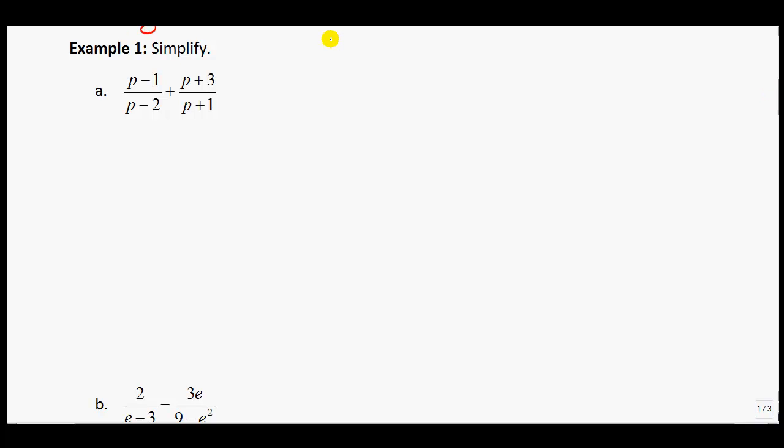Like all of them, I start out with doing my non-permissible values first, so my NPVs. For this one, my NPVs, you'll note that we have p cannot equal positive 2, and p cannot equal negative 1. Basically, you just take your denominators and set them not equal to 0.